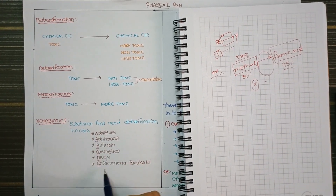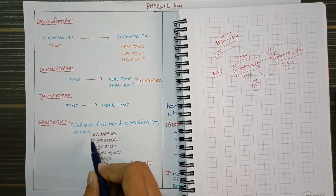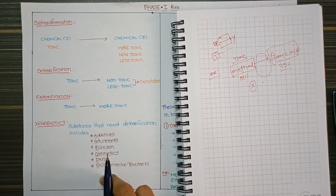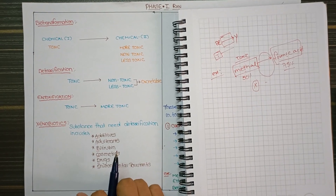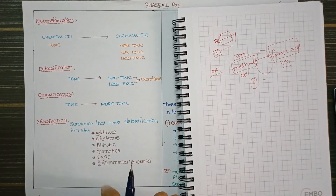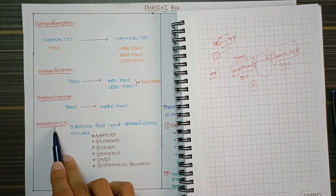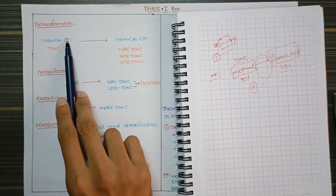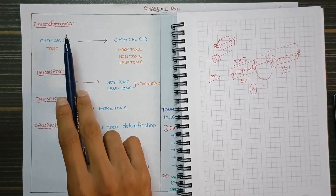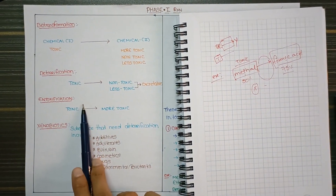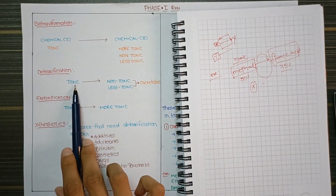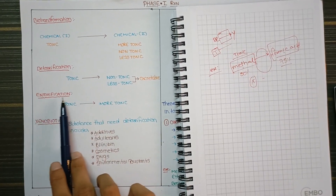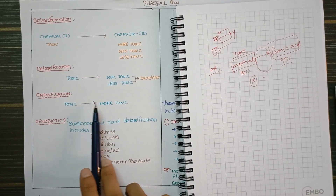These foreign particles are metabolized and excreted. In xenobiotics, the user's reaction is the biotransformation reaction. In biotransformation, there are detoxification and intoxication reactions. In detoxification, toxic compounds become non-toxic or less toxic. In intoxication, toxic compounds become more toxic.